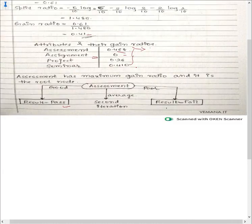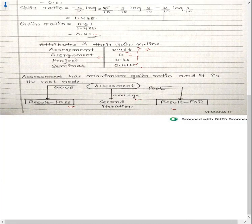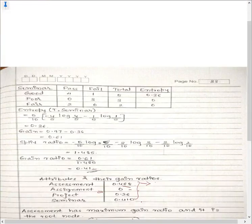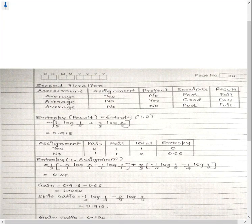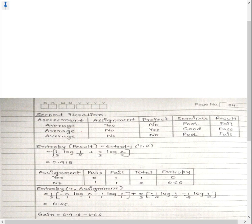When constructing the tree with assessment as root: for the good branch, all instances are pass — it yields a leaf node. For the poor branch, all instances are fail — it also yields a leaf node. For the average branch, we have a combination of both pass and fail, so it does not directly yield a leaf node. We must go for a second iteration.